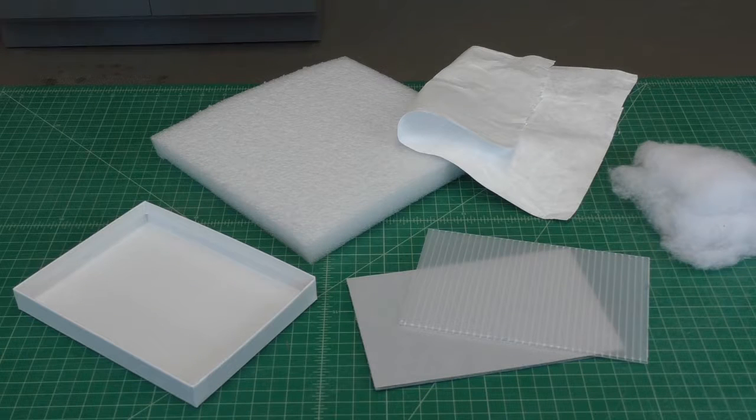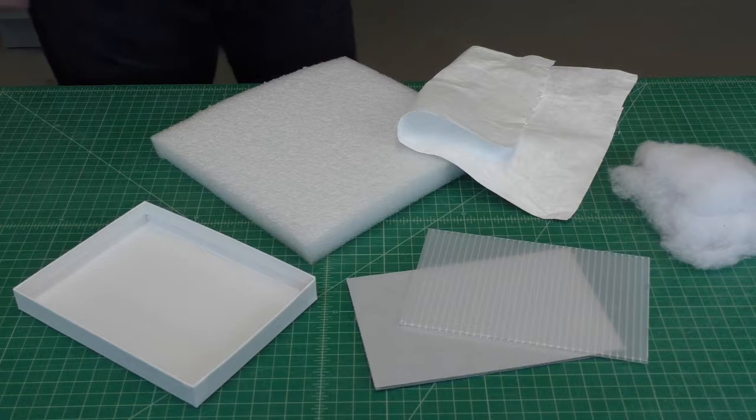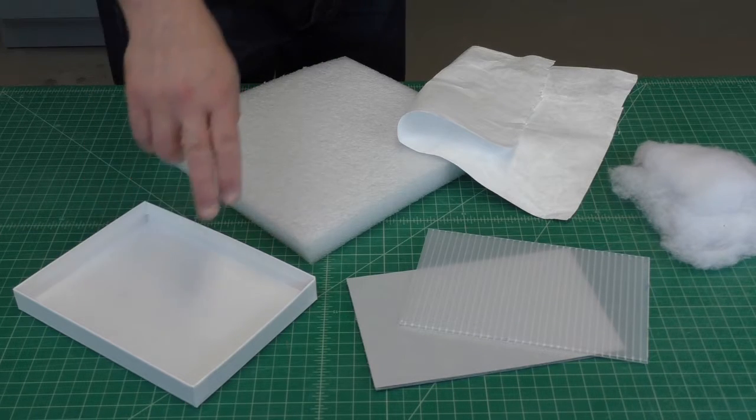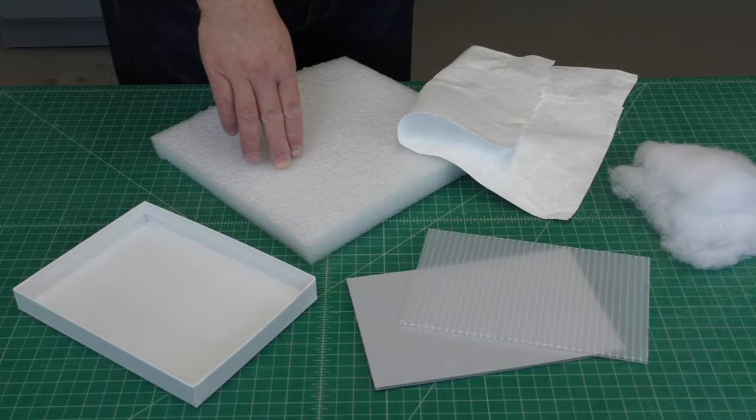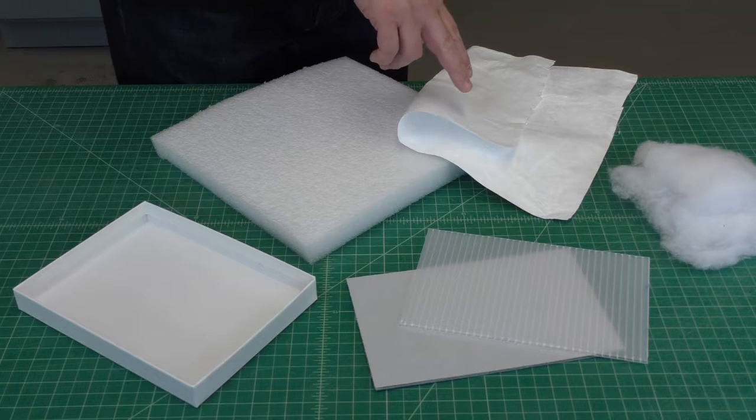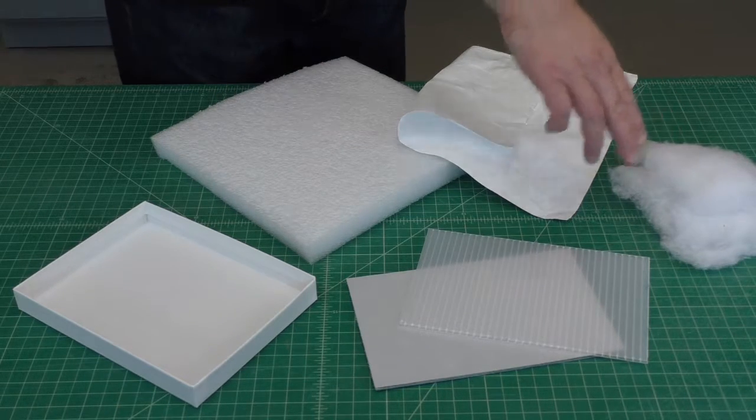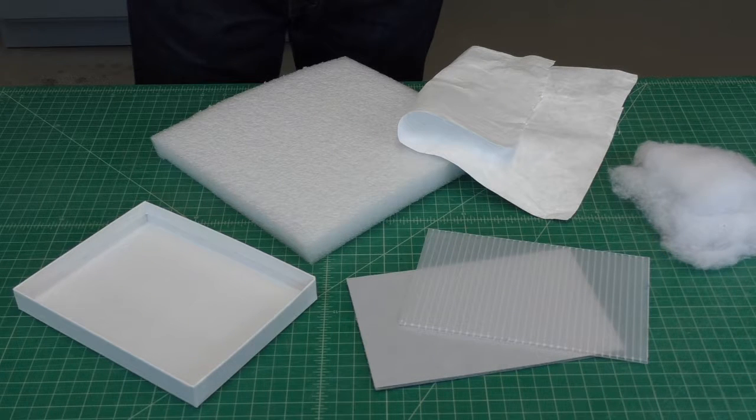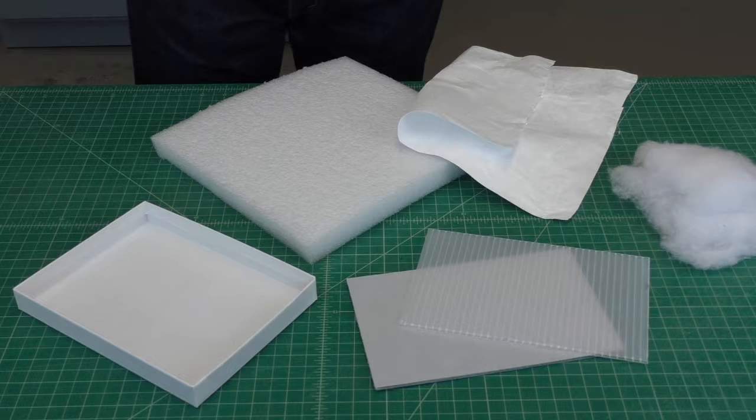If we're going to make an archival cavity mount, we need archival-grade materials: an acid-free specimen tray, some ethafoam board, soft-wrapped Tyvek, polyester batting, and some corrugated bumper board. These materials are all chemically inert and will last for decades without degradation or damage to specimens.